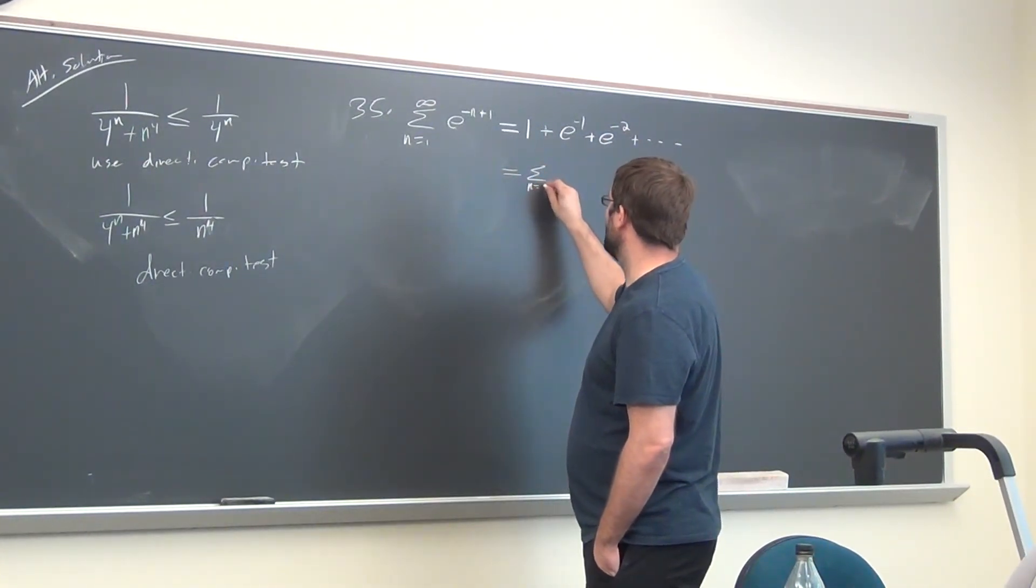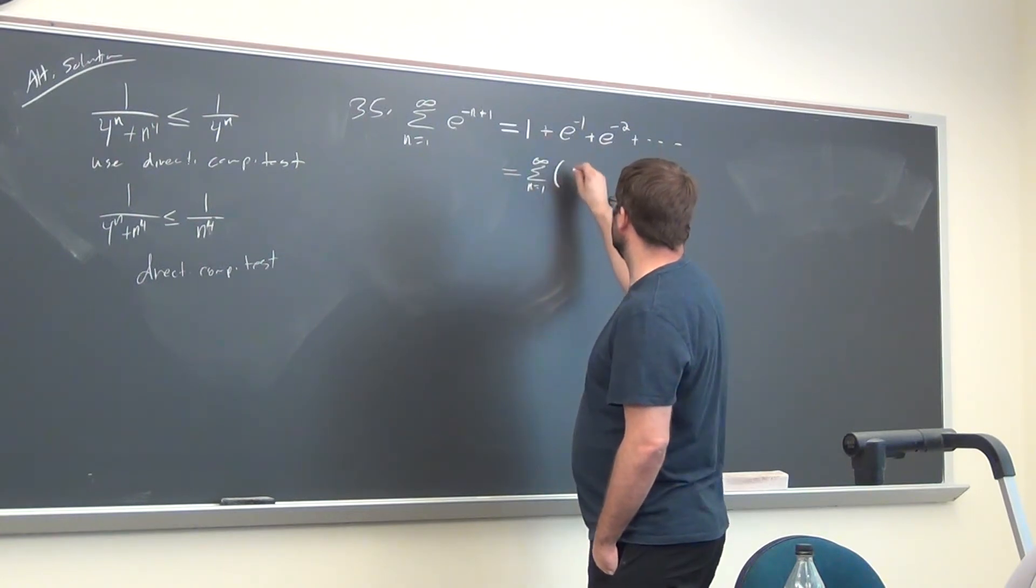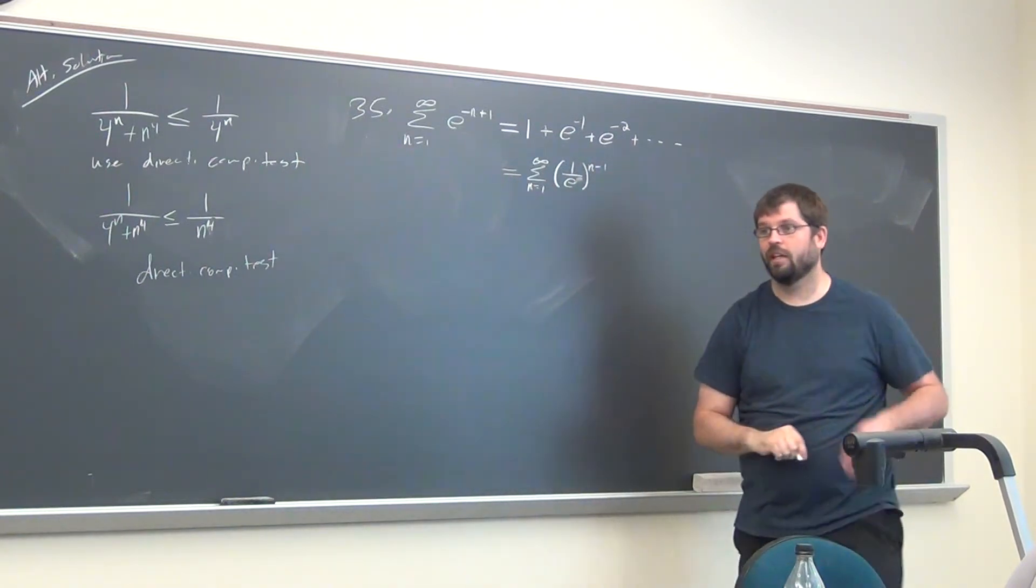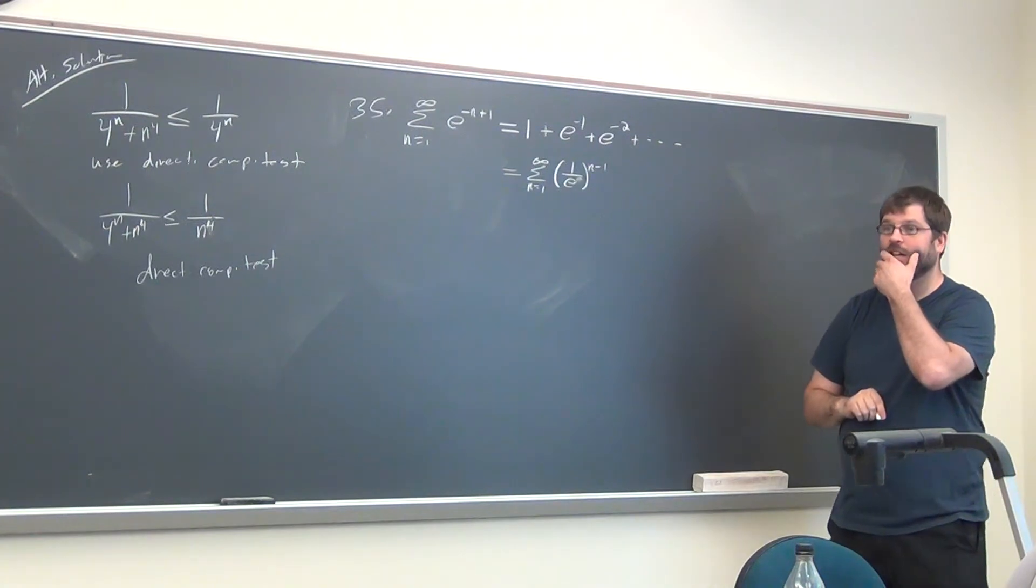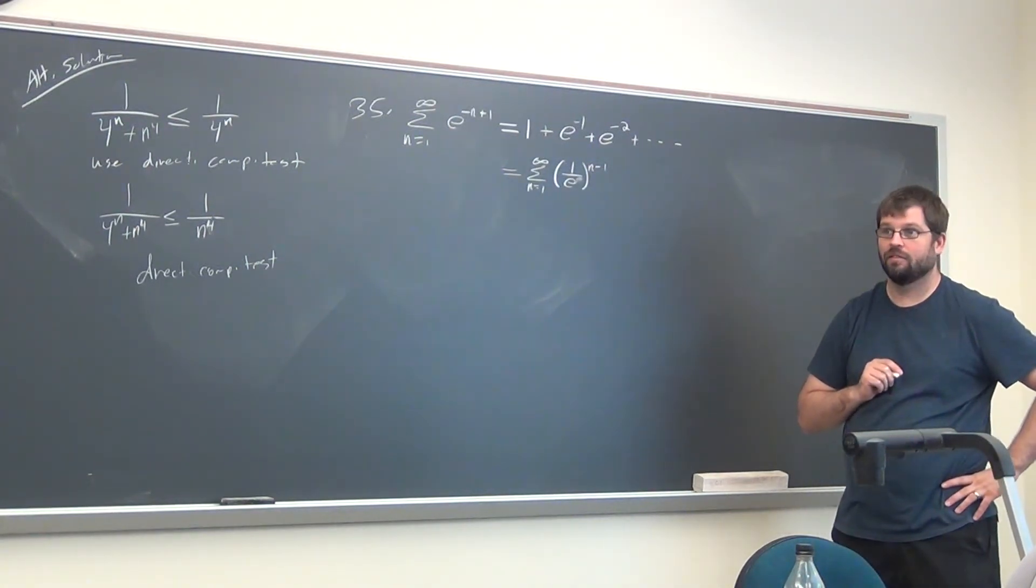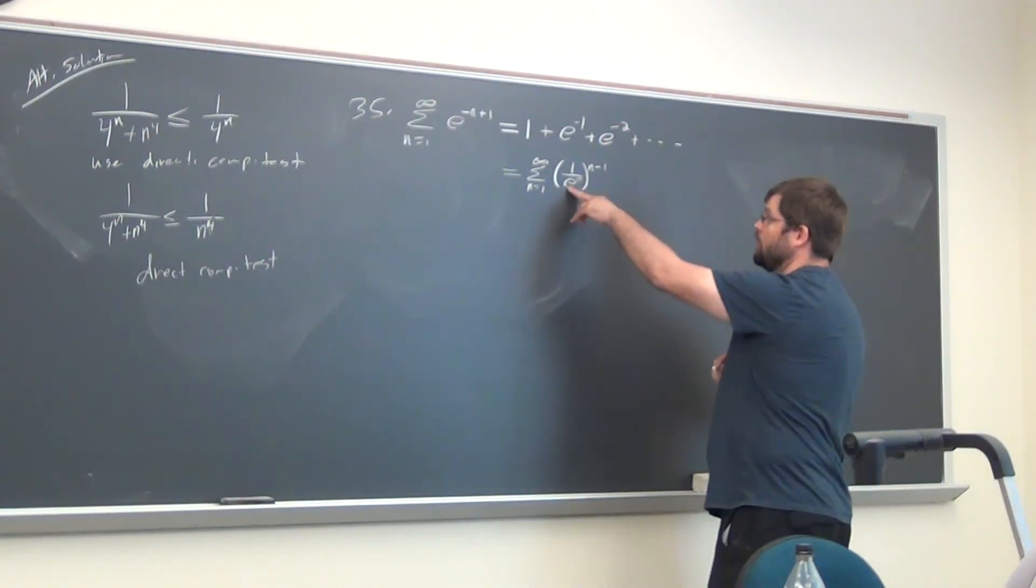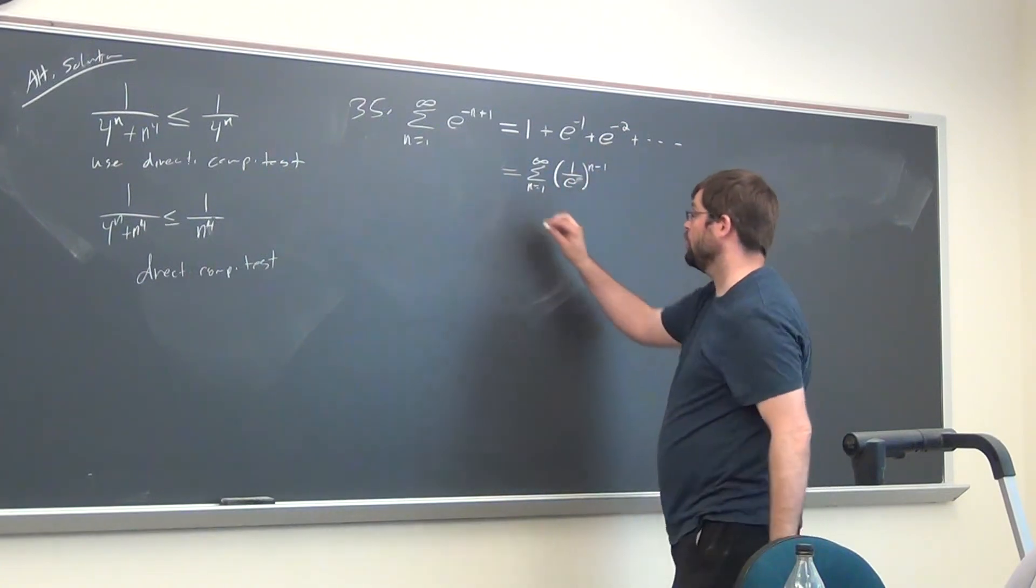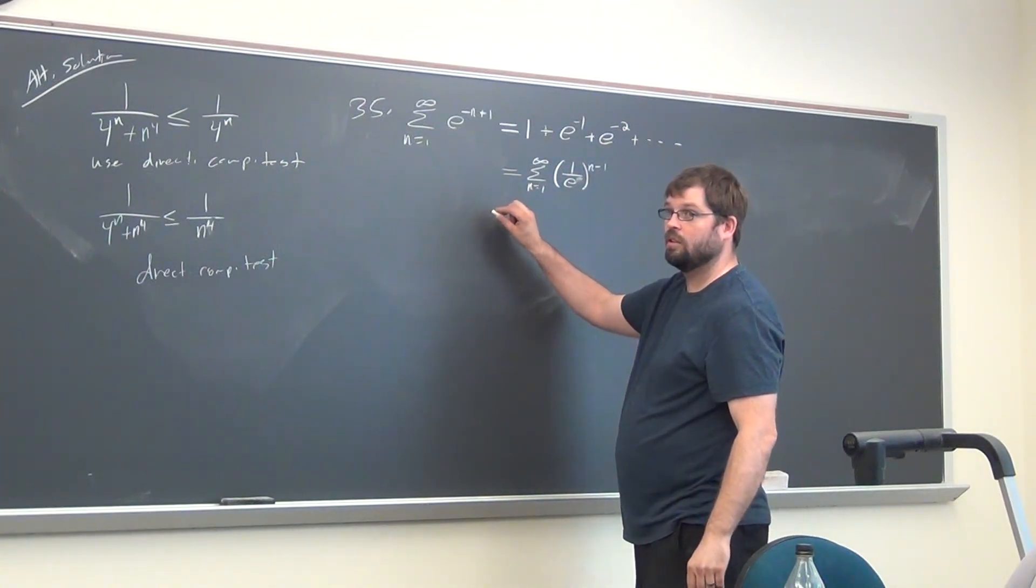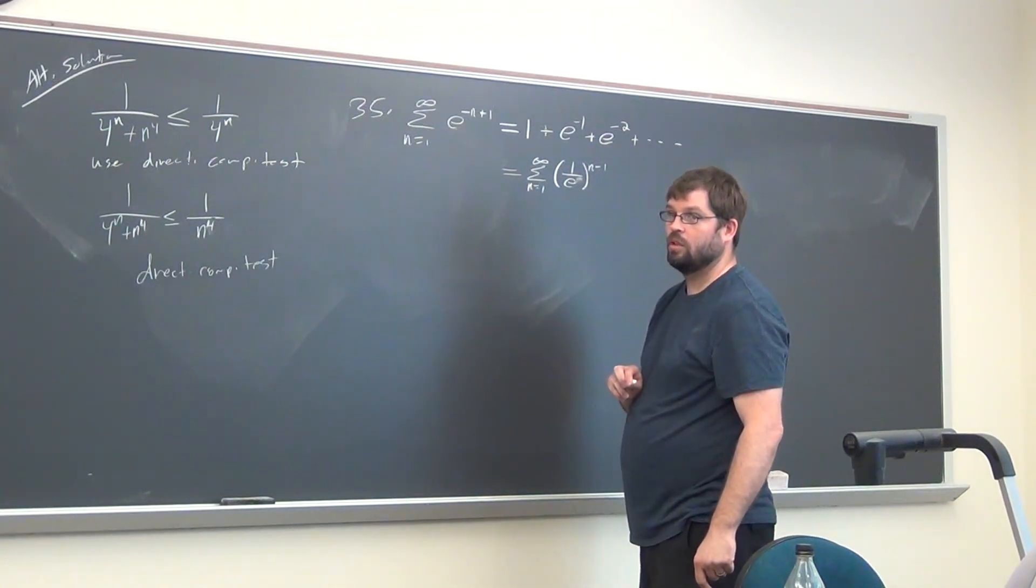I would say it's even easier just to view this guy like that. Let me write it this way: 1 over e to the n minus 1. So what kind of series is that? Geometric. It's a geometric series. It's already in the right form, so there's really no other work you need to do.